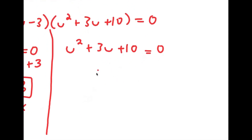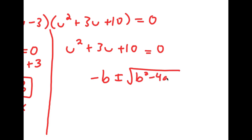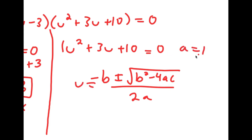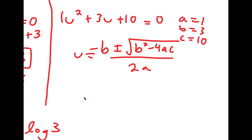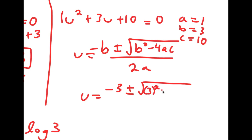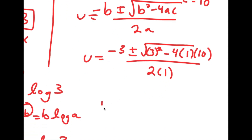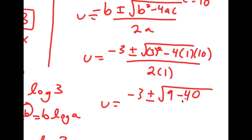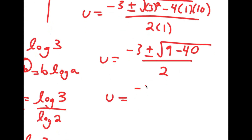Going back to the second equation, u squared plus 3u plus 10 equals 0. Using the quadratic formula — negative b plus or minus the square root of b squared minus 4ac, all over 2a — I get u equals negative 3 plus or minus the square root of 3 squared minus 4 times 1 times 10, all over 2. That simplifies to negative 3 plus or minus the square root of 9 minus 40, all over 2, which equals negative 3 plus or minus the square root of negative 31, over 2.